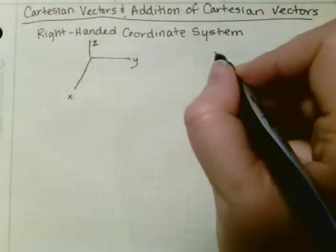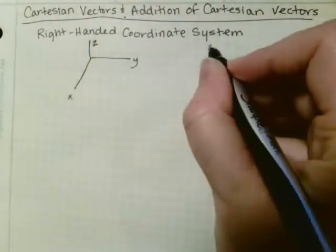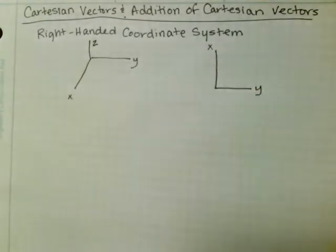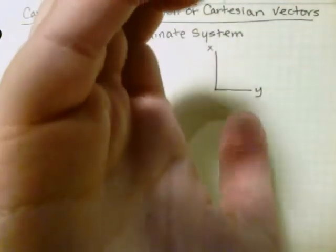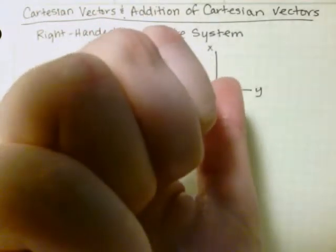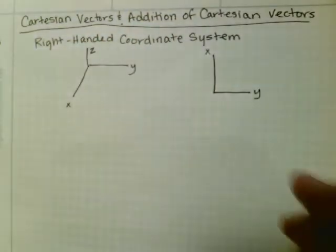So let's try another one. Okay, so if I do the same thing, so I've got x, and I need to curl towards y, and my thumb is going into the page, which means that z goes into the page.